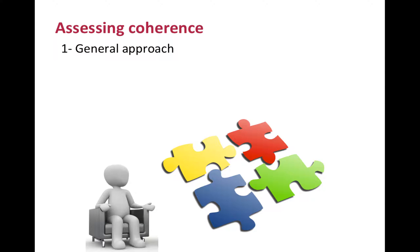The general approach to assessing coherence consists of exploring how the client builds symbolic networks to integrate the different elements of his experience. In simpler terms, we are interested in how the client conceptualizes the events of his life, in the kinds of stories he tells, and whether these ideas, concepts, and beliefs are useful to build a meaningful life. We also want to explore to what extent functional, essential, and social coherence are influencing the way the client builds symbolic networks.